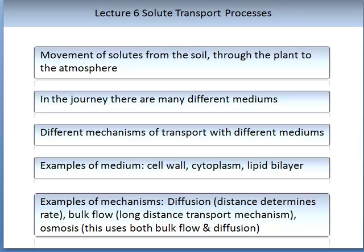The first mechanism is diffusion. This is determined by distance — diffusion over small distances is very efficient, while diffusion at longer distances is less efficient. This is where bulk flow is incorporated, as it is much more effective as a long distance transport mechanism. Osmosis is the third mechanism involved, and this involves both bulk flow and diffusion.